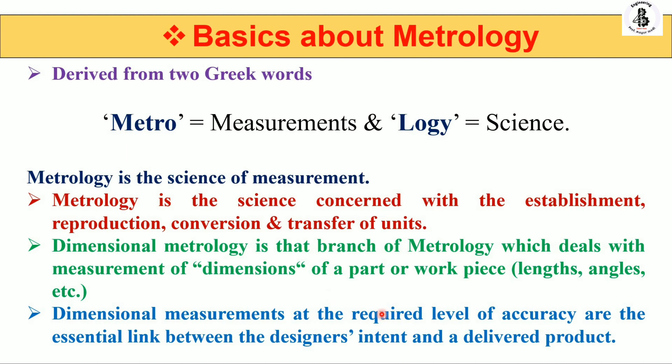Dimensional measurement at the required level of accuracy is the essential link between the designer's intent and the delivered product. Whatever requirement the customer has is designed by the designer, and during manufacturing it must be verified whether the product is made as per design. The designer makes a design and the production engineer makes the finished product, so at the final stage the dimensional accuracy is measured to ensure conformance.